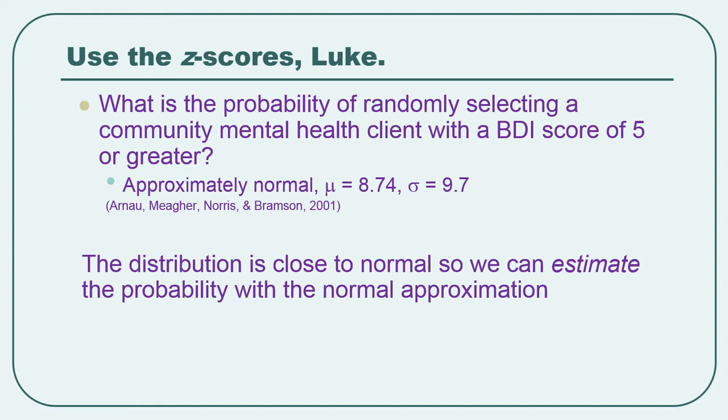What's the probability of randomly selecting a community mental health client with a BDI, Beck Depression Inventory score of 5 or greater? It's a short little test we give to people just to kind of get a rough idea of how you're feeling lately. It's not a good diagnostic tool, but it's a screen. If you get a really high score on it, it means that you're experiencing some symptoms that might be depression. And so somebody's probably going to talk to you about that.